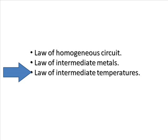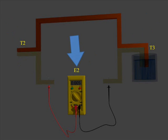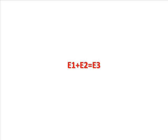The third law, law of successive or intermediate temperatures: EMF E1 is generated when two dissimilar metals have junctions at temperatures T1 and T2, and EMF E2 results for temperatures T2 and T3. It follows that EMF E3 results at output terminals when the junctions are at temperatures T1 and T3. Here, E1 plus E2 equals E3.